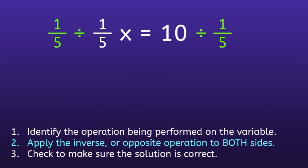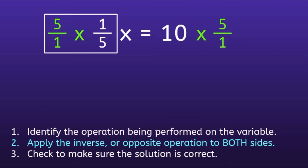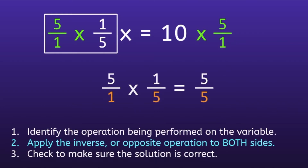After watching that video, we know the two steps we have to do are change and flip when dividing fractions. On both sides, we're going to change the division sign to a multiplication sign, and then flip the fraction one-fifth to get the reciprocal. Focusing on the left side, we have 5 over 1 times 1 over 5. Multiplying the numerators: 5 times 1 is 5. Multiplying the denominators: 1 times 5 is 5.